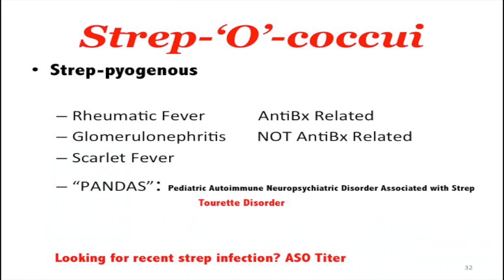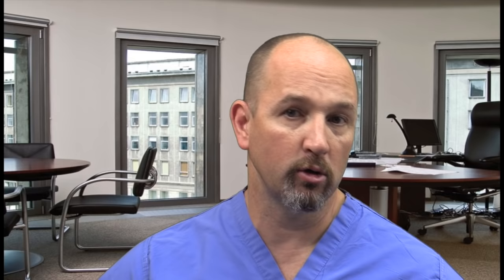For a recent strep infection, check an ASO titer — important for a kid presenting with tea-colored urine and protein in the urine. Strep pyogenes are beta-hemolytic strep. Strep throat causes rheumatic fever, glomerulonephritis, scarlet fever, and PANDAS (pediatric autoimmune neuropsychiatric disorders associated with strep) — linked to Tourette's. Campylobacter has been linked to Guillain-Barré syndrome.